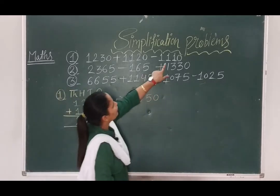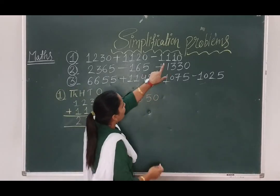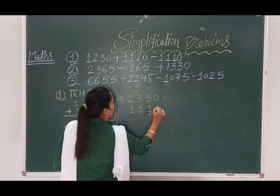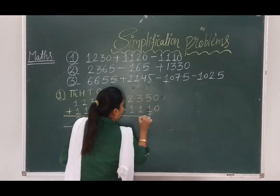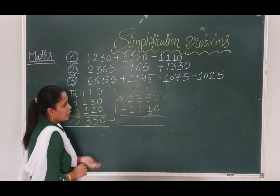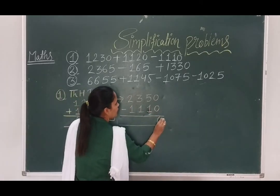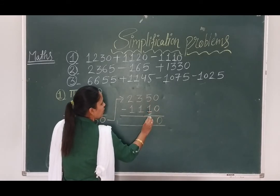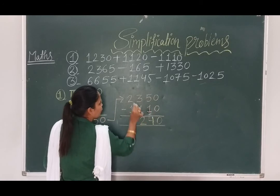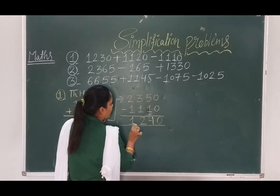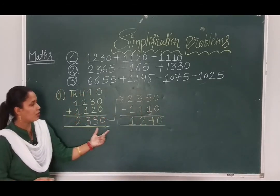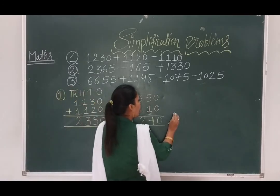Next, we can see minus 1110. Now subtraction: 0 minus 0 is 0, 5 minus 1 is 4, 3 minus 1 is 2, 2 minus 1 is 1. So our answer to this question is 1240.